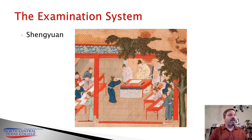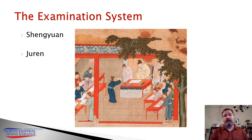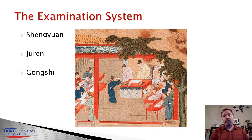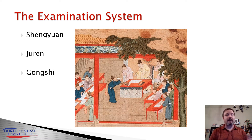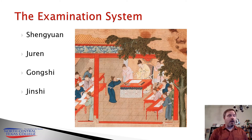From there, you could take the provincial exam. If passed, the provincial exam would bestow upon you the rank of juren. Jurens were then allowed to take the metropolitan examination in Beijing, which if passed would give you the title of Gong Xi — which literally means tribute literatus. If you were among the highest qualifiers, you would actually get the title of Jin Xi, which means presented literatus. Jin Xi was the highest rank. So you have four ranks developed out of this system.